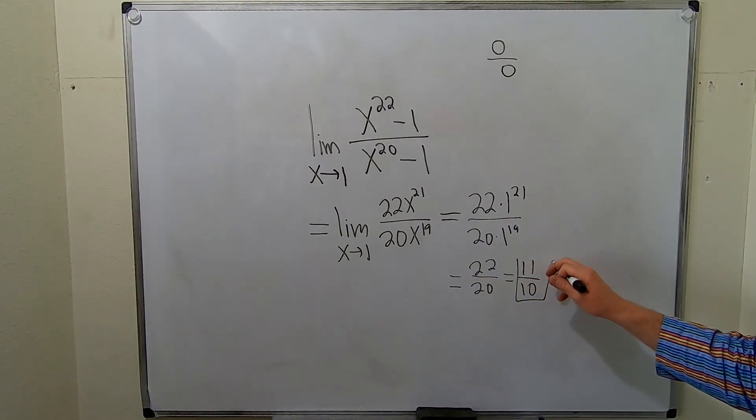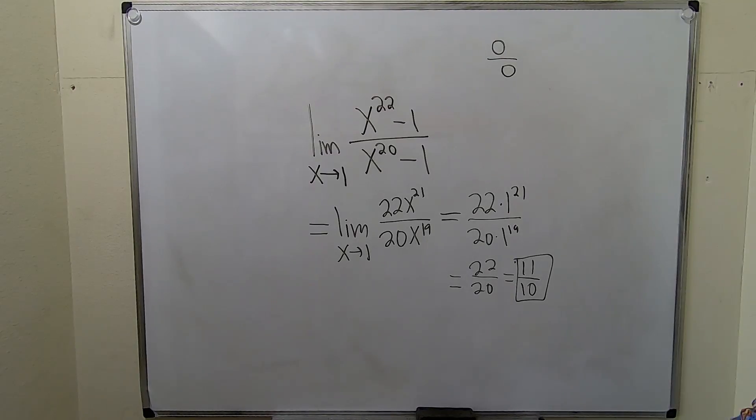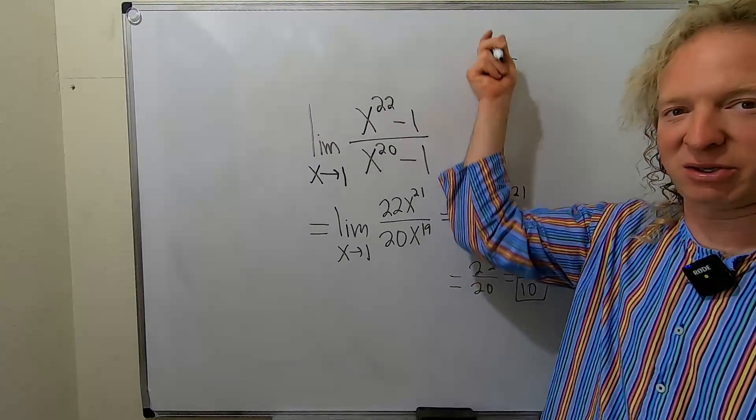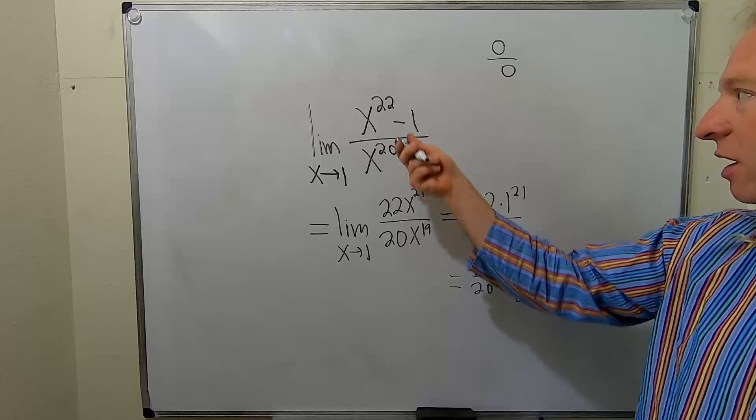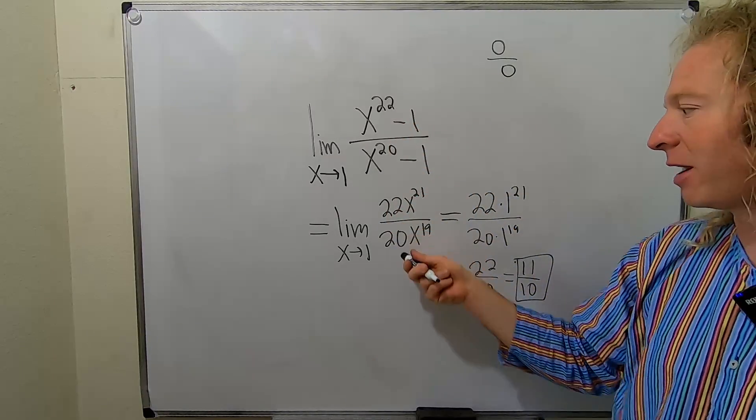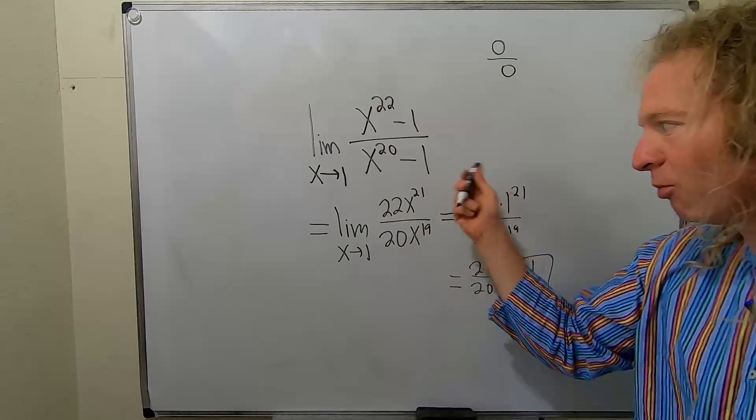And that, my friends, is the final answer. The power of L'Hopital's rule. So whenever it's like 0 over 0 or infinity over infinity, just take the derivative of the top and take the derivative of the bottom. And then just see what happens. And you can use it more than one time.